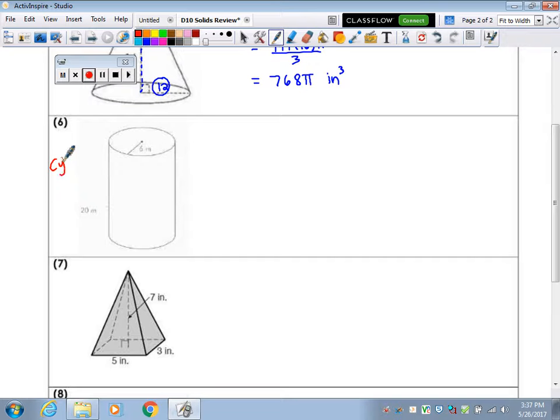Volume of a cylinder. I'm going to check my card, make sure I have this one written down. Volume equals π r squared h. So there's no divided by 3 on this one, because it doesn't come to a point. The radius I know is 6, and the height I know is 20. So this is 720π meters cubed.